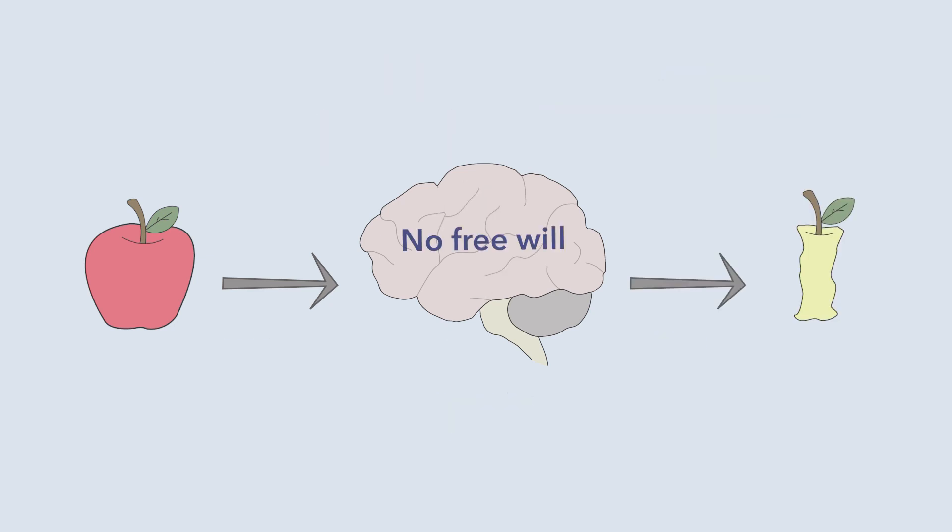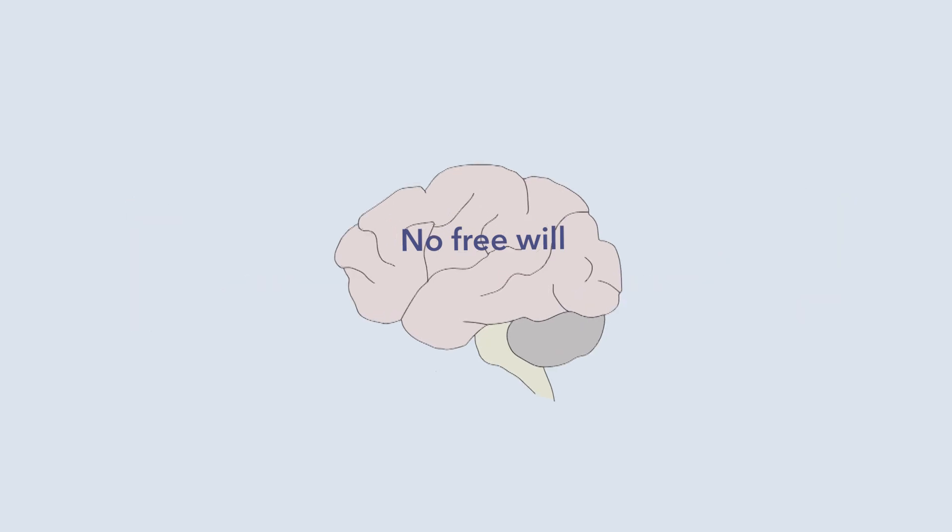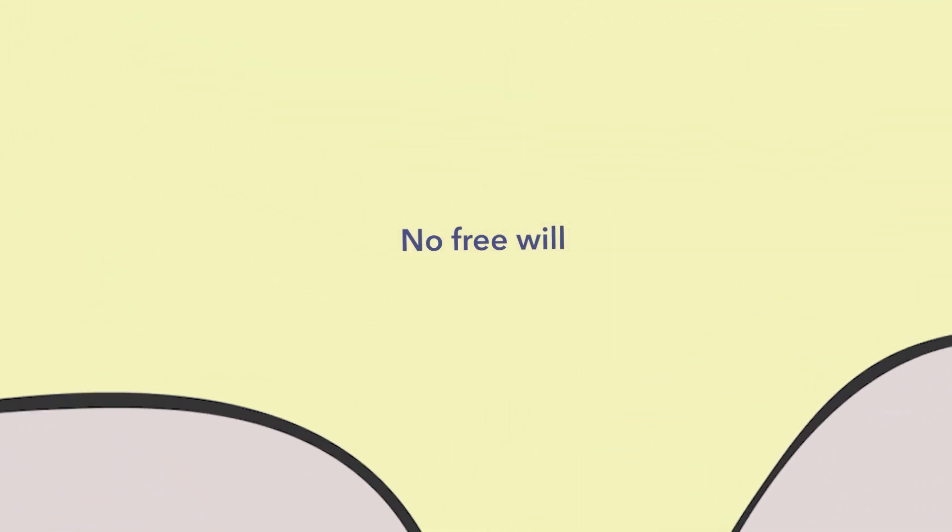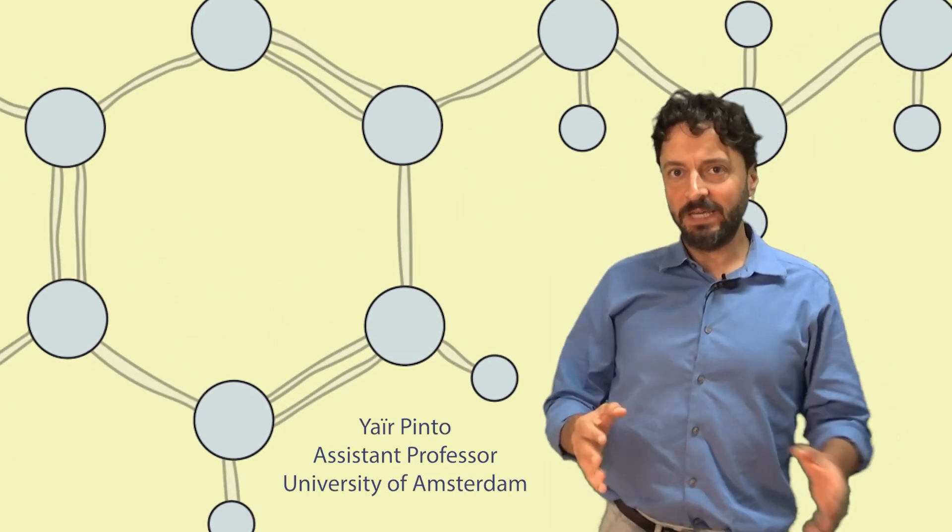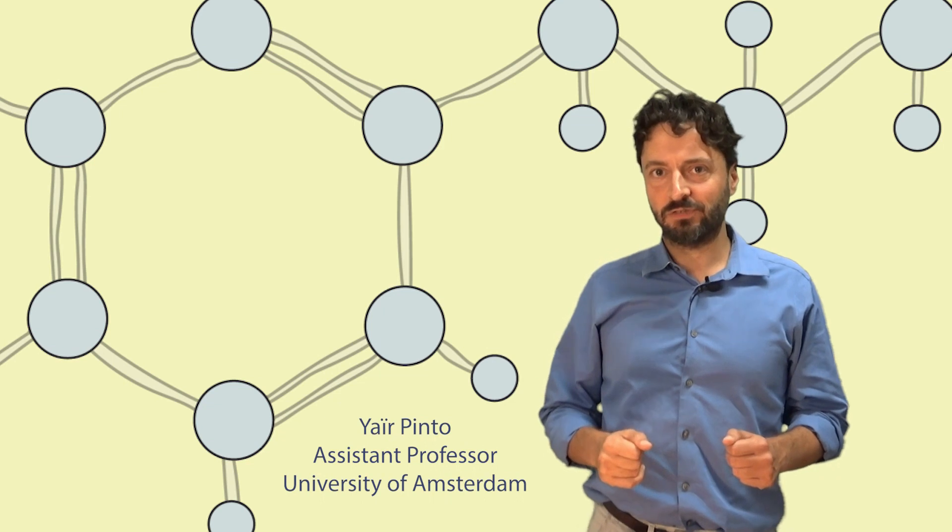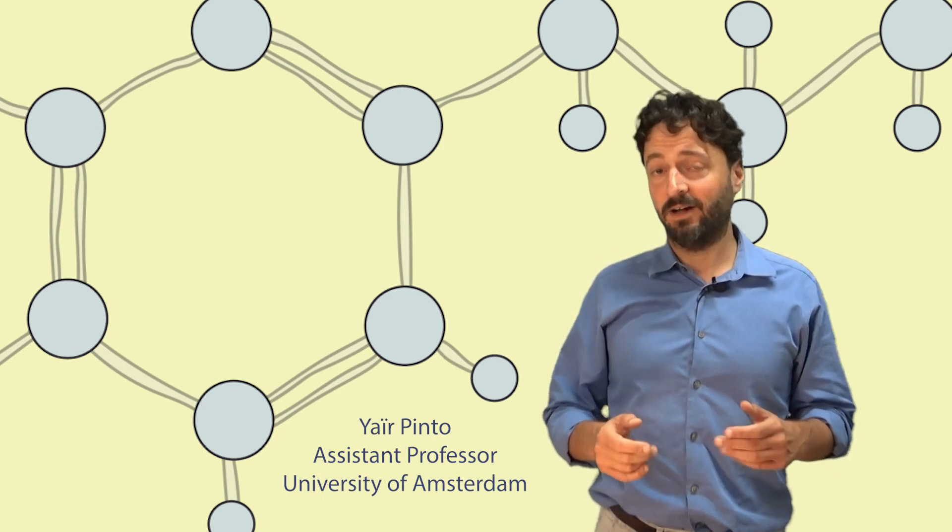Scientists haven't found any mechanism that could allow for free will, not on the level of brain areas, not on the level of brain cells, and not even on the level of molecules. Although you have the feeling that you freely make your decisions, you could have never done anything other than what you did.